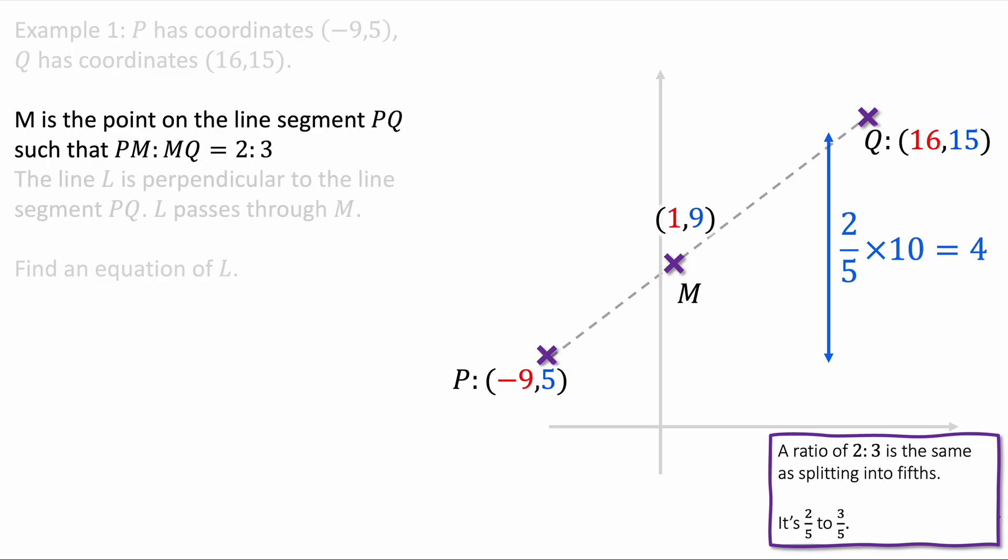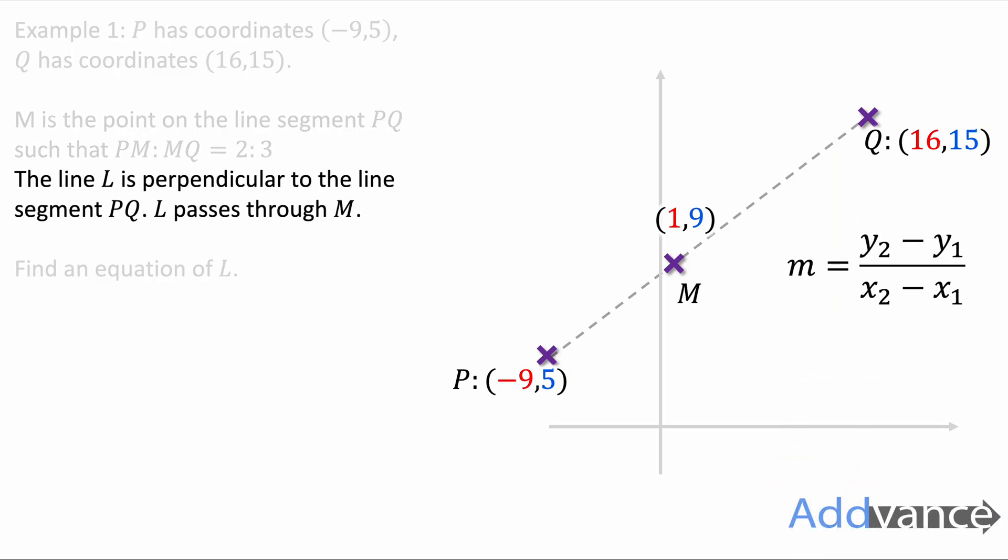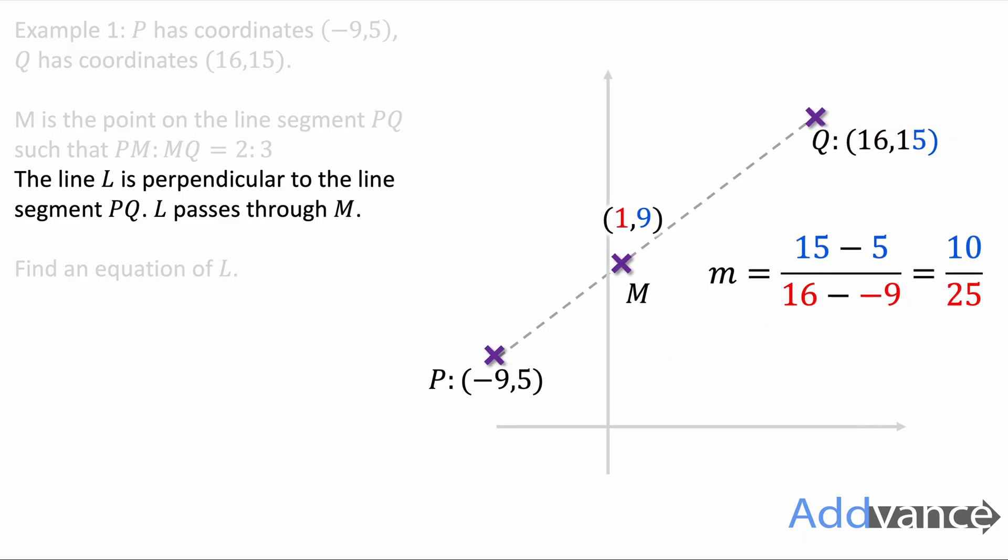This is really helpful because now we're going to try and find the perpendicular line that goes through M. We'll use the equation of the gradient between P and Q and afterwards we'll make it perpendicular. We work that out to be 10/25 which simplifies to be 2/5. That is the parallel gradient between P and Q. To make it perpendicular we'll flip it upside down and make it negative. We get -5/2. That is a perpendicular gradient.